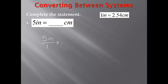Now I'm going to multiply by the conversion factor. I want to convert this to centimeters, so I need to place centimeters in the numerator. That leaves inches for the denominator. Using my conversion factor, I can plug my numbers in. I have one inch, so with inches I will put a one, and that's equal to 2.54 centimeters, so with my centimeters I put 2.54. Since I have inches in the numerator of one fraction and inches in the denominator of the other fraction, those will cancel out.